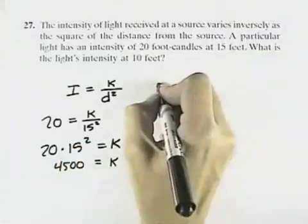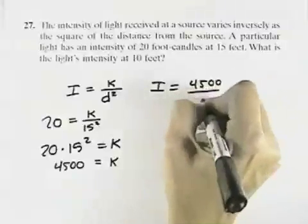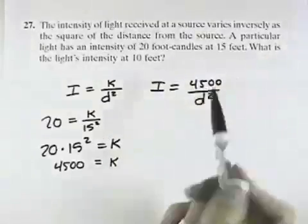So that means we can rewrite our equation as I equals 4,500 divided by D squared, because we now know the constant of variation. Now it asks,